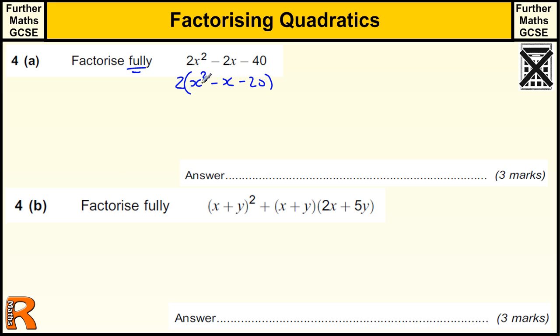And then from here, we need to factorize this quadratic expression. So we need to find a pair of numbers that multiply to give us 20, minus 20, but are 1 apart.